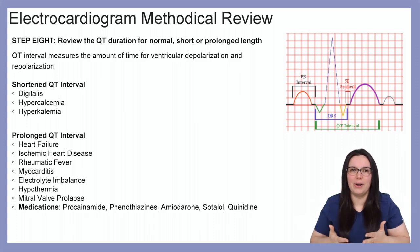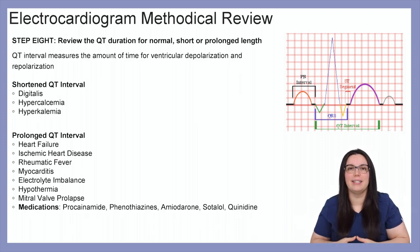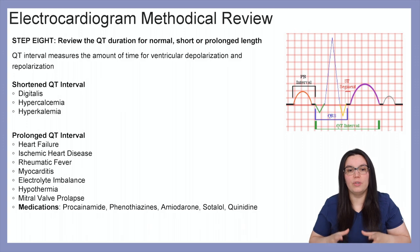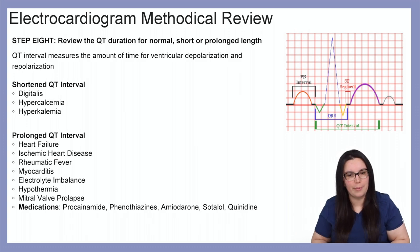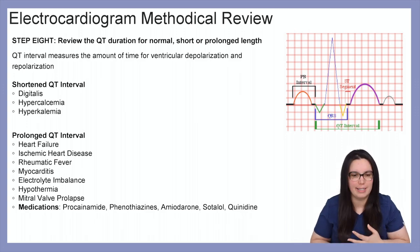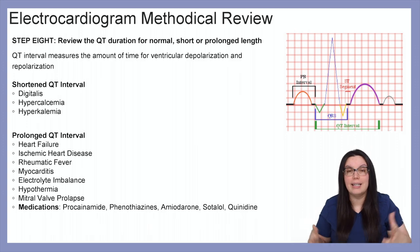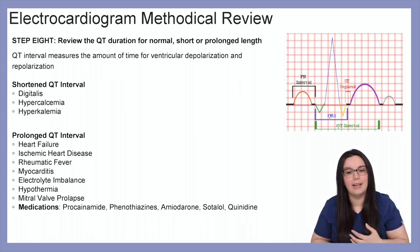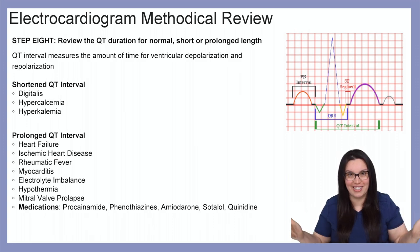Step eight: review QT duration as either normal, short, or prolonged. The QT interval measures the amount of time for ventricular depolarization as well as repolarization. A shortened QT interval can be caused by digitalis, hypercalcemia, or hyperkalemia. Prolonged QT intervals are associated with heart failure, ischemic heart disease, rheumatic fever, myocarditis, electrolyte imbalances, hypothermia, mitral valve prolapse, and medications.